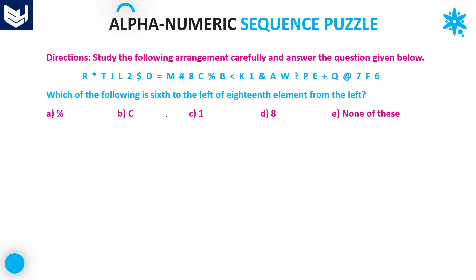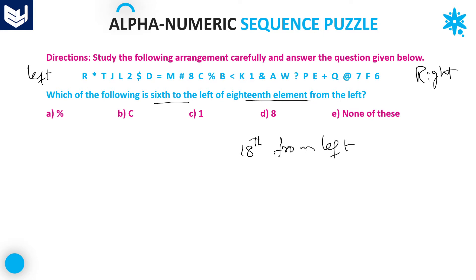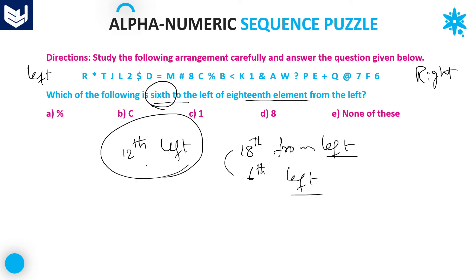Let's move on to the next question: which of the following is the 6th to the left of the 18th element from the left? Here, whenever both directions are 'left,' you can use the shortcut method — directly take the difference between the two positions. 18 minus 6 gives the 12th element. So what is the 12th element from the left? That is your answer.